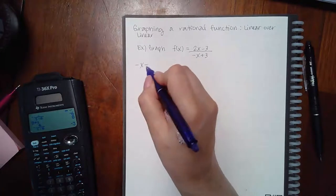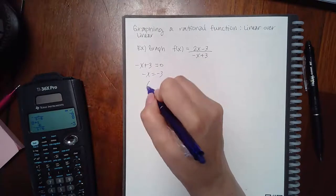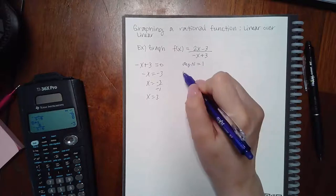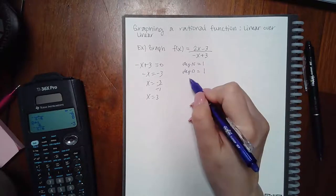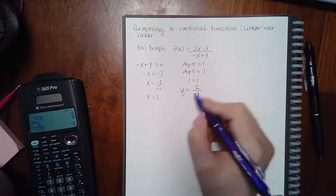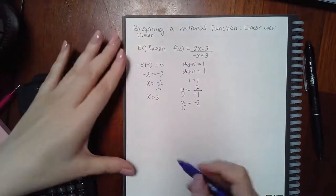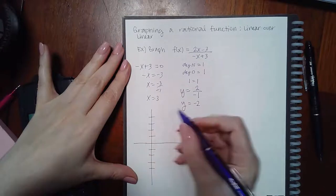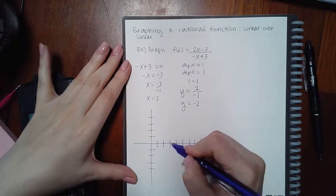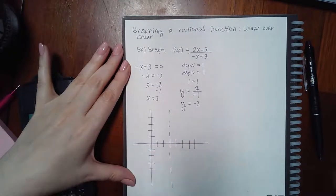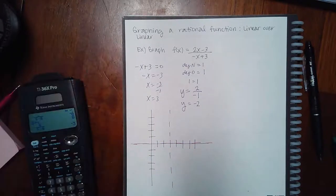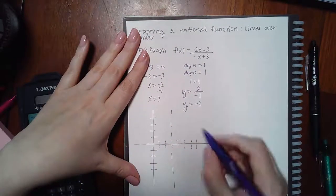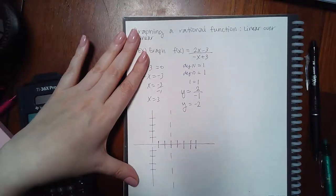Find the vertical asymptote by setting the denominator to zero, then find the horizontal asymptote. Since the degrees are the same, the horizontal asymptote is at y equals the coefficient of the numerator over the coefficient of the denominator. The vertical asymptote is at x = 3, and the horizontal asymptote should be at y = −2.